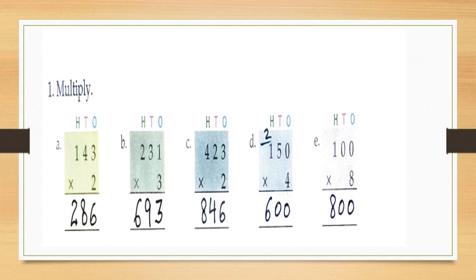Now B part: two hundred and thirty one multiply by three. First multiply the ones by three — that is one into three is three. Write three under ones. Then multiply the tens by three — that is three into three is nine. Write nine under tens. Now multiply the hundreds by three — that is two into three is six. Write six under hundreds. So children your answer will be six hundred and ninety three.